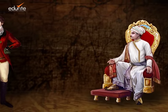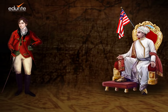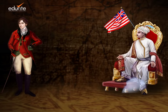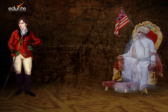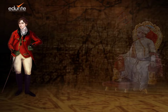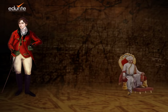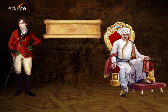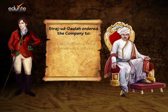What the company wanted was a puppet ruler who would act in their favour. So they tried to replace the then Nawab of Bengal, Sirajuk Daula, with one of his rivals. This angered Sirajuk Daula, and he ordered the company to stop interfering in his governance affairs.